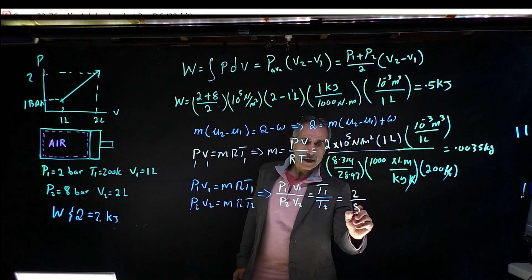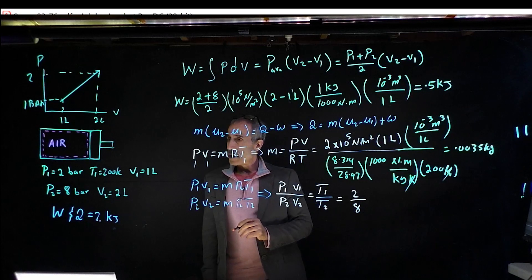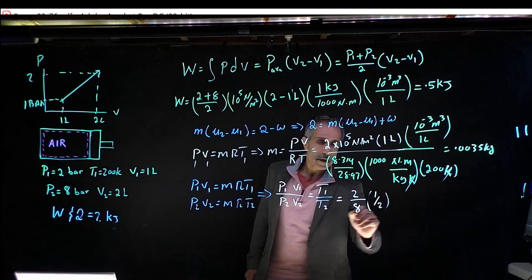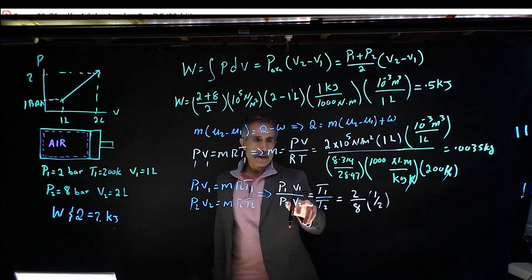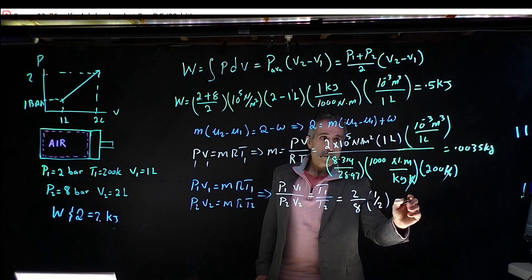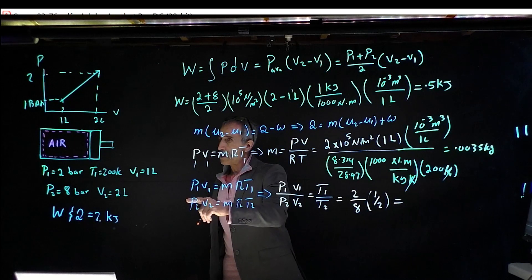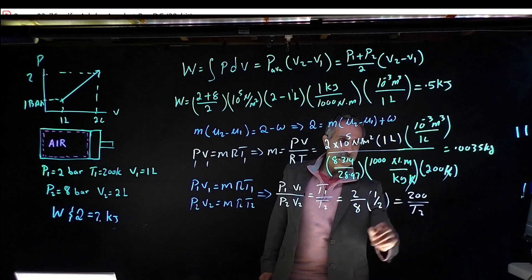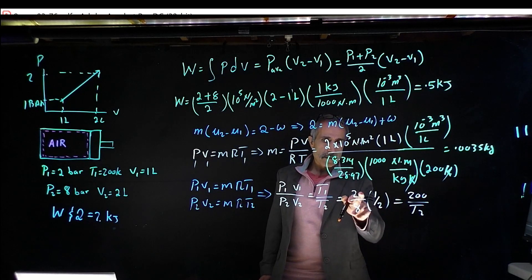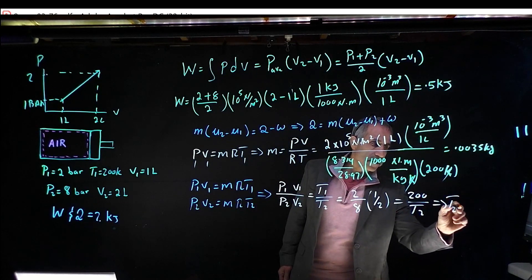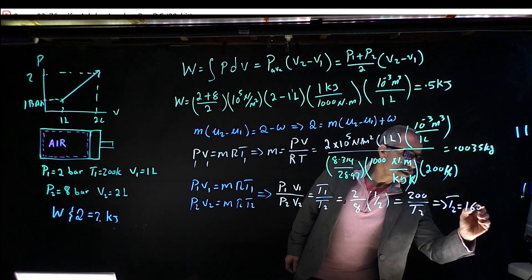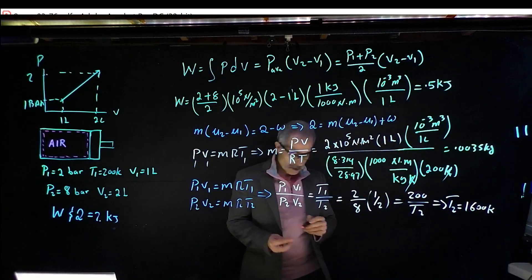Don't worry about the units there. And V1 over V2 is basically times 1 over 2. And then we have T1 which was given as 200 Kelvin divided by T2, we don't know T2. So that's going to give me T2 equals 1600 Kelvin.